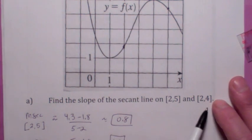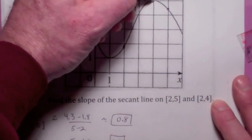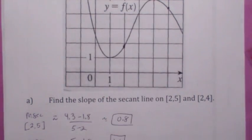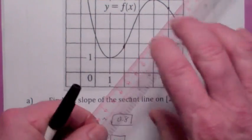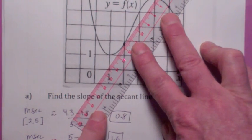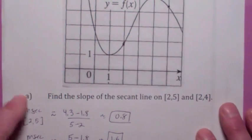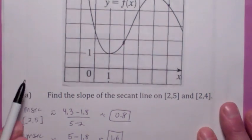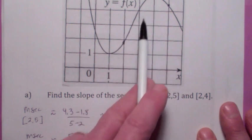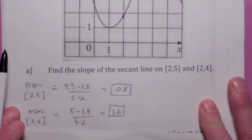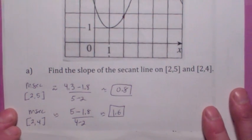Second question: they want you to find the slope of the secant line on 2 to 4. So from this point when x is 2 to this point when x is 4, you want to find the slope of that line. You just take the change in y, so this looks like about 5 minus 1.8 divided by 4 minus 2, and you get about 1.6.